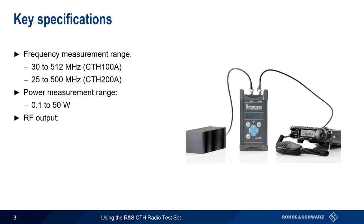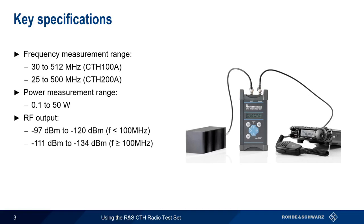The CTH's internal RF generator, used in receiver testing, can output power in the range of −97 to −120 dBm for frequencies below 100 MHz, and −111 to −134 dBm at higher frequencies.